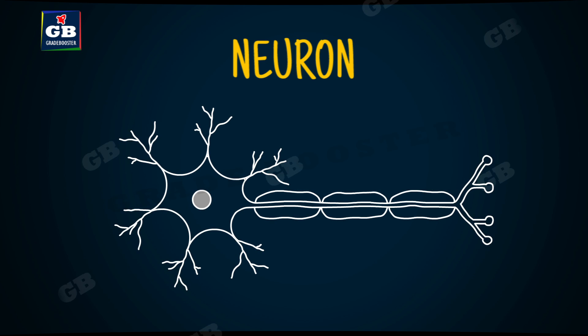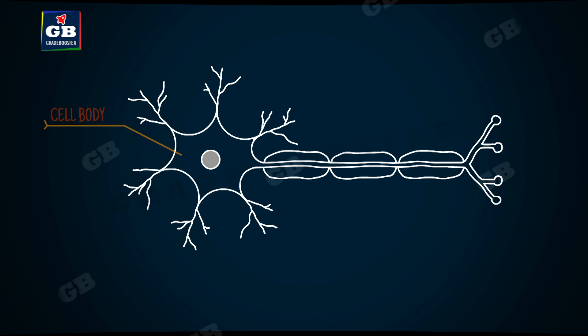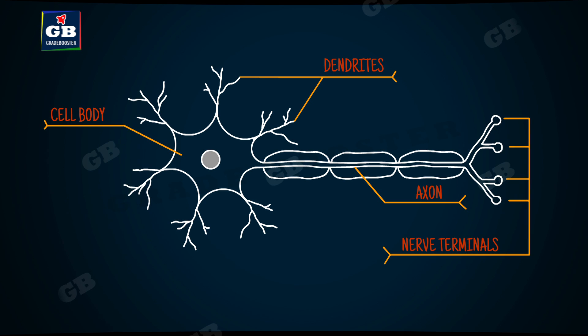Here we have a diagram of a neuron. Let us identify the different parts of the neuron by labeling them. This is the cell body. These are dendrites, and this is the axon, and these are the nerve terminals or nerve endings.